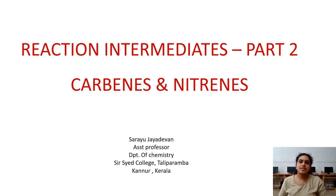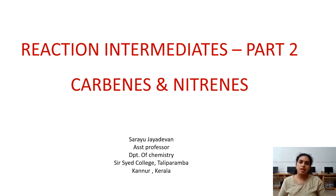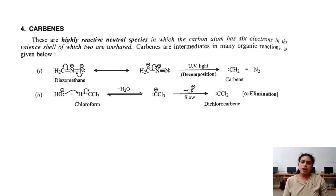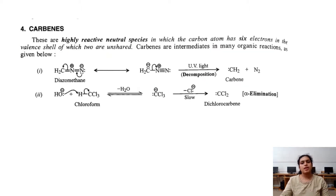Hi all, this is the second session of our discussions regarding reaction intermediates. The intermediates discussed today are carbenes and nitrenes. Carbenes are highly reactive neutral species in which the carbon atom has 6 electrons in the valence shell.